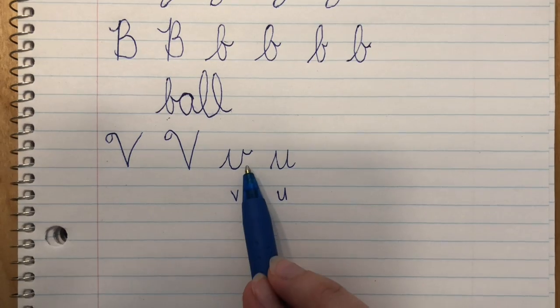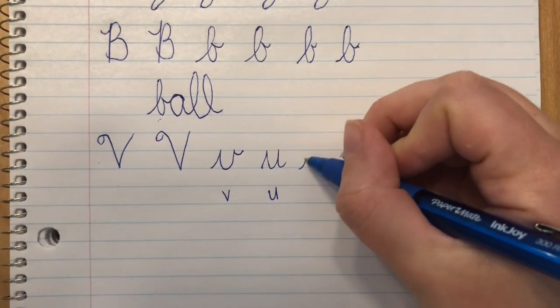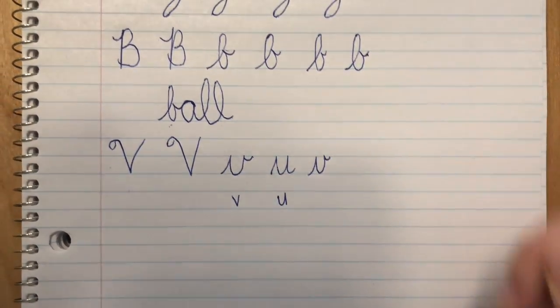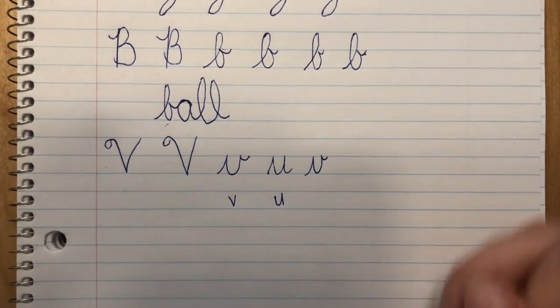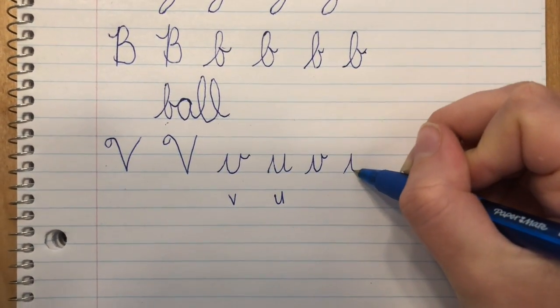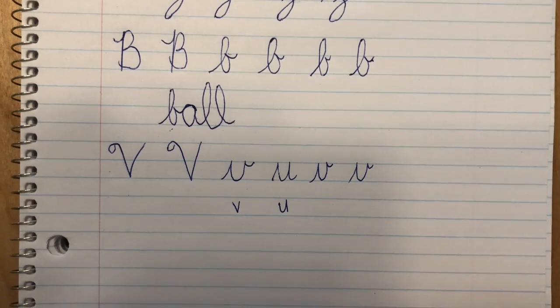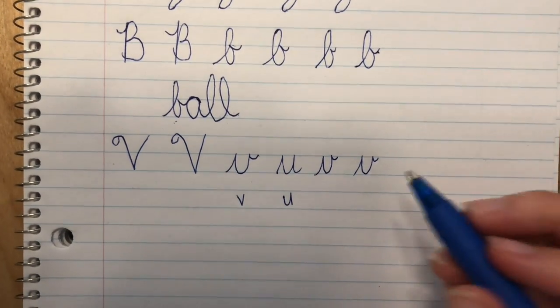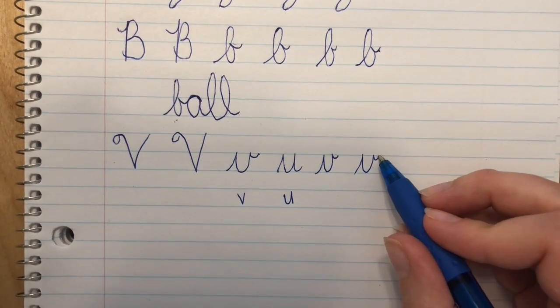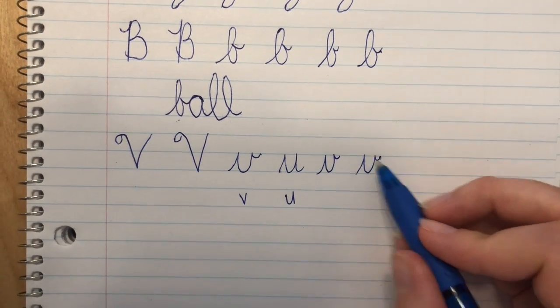It's really important that you practice that carefully. So with a v, you're going to end in the middle with that little bump. Practice that today. Practice ending your bump on the center line.